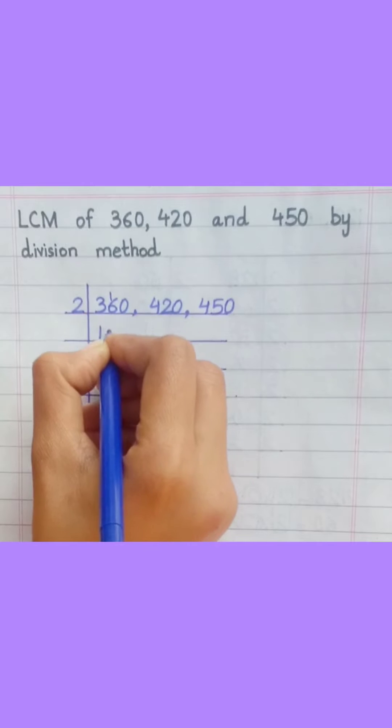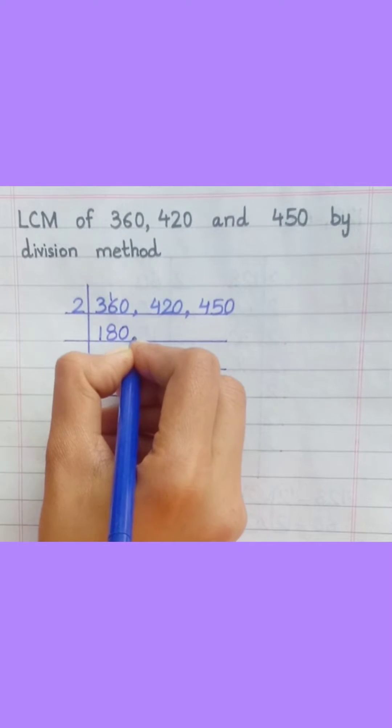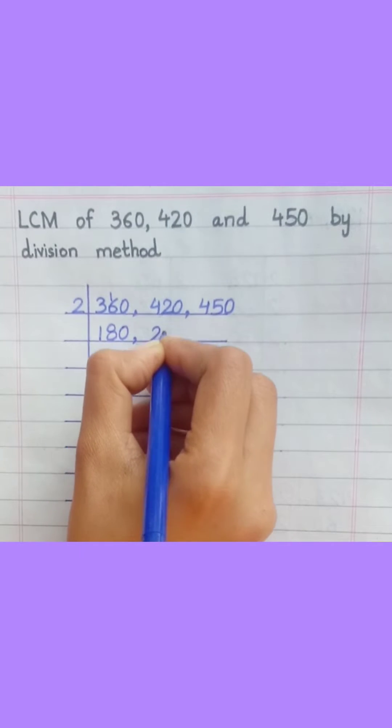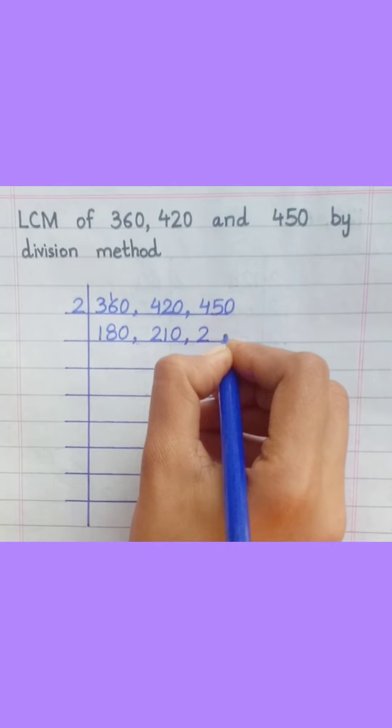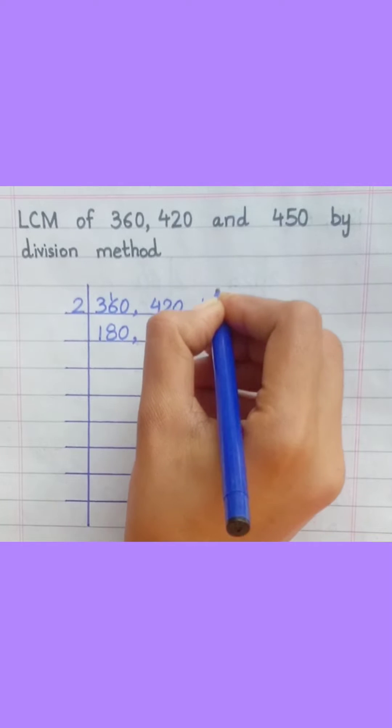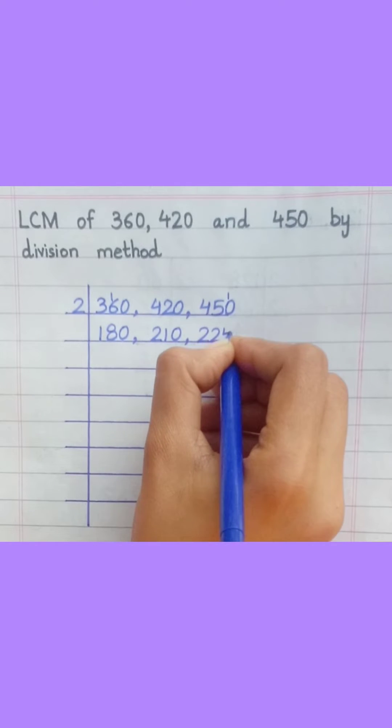2 ones are 2, two eights are 16, two zeros are 0, two twos are 4, two ones are 2, two zeros are 0, two twos are 4, two twos are 4, two fives are 10.